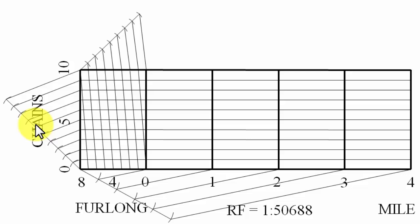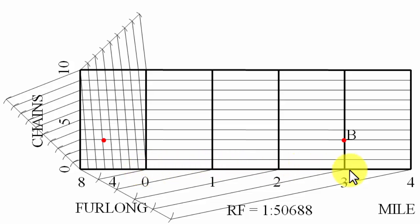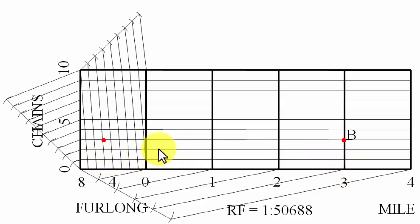Using the completed scale, we need to show 3M 5F 3CH — three miles, five furlongs, and three chains. Start from the three-mile mark as the benchmark. From zero to three miles gives three miles; moving along the diagonal to the five-furlong line gives three miles and five furlongs; then reading up to the three-chain horizontal gives three miles, five furlongs, and three chains. That distance is the required measurement.